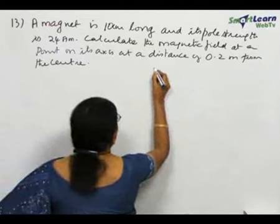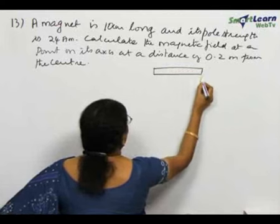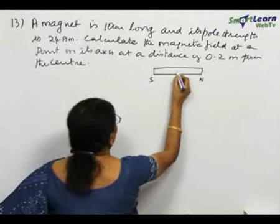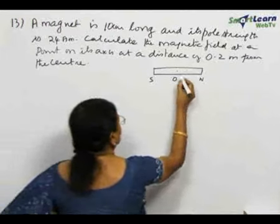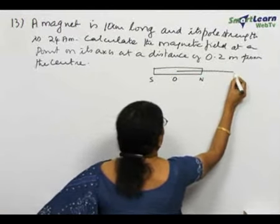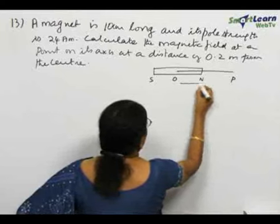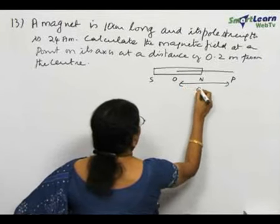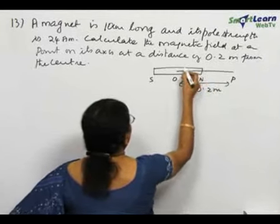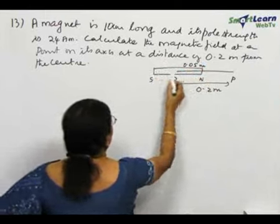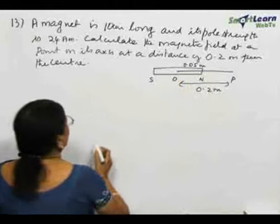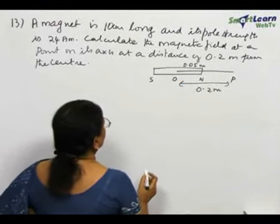First of all, let us draw the diagram. This is the north pole, south pole, midpoint of the magnet is O. All distances are measured from the midpoint. This is P. This distance is 0.2 meter. The semi-length of the magnet is 0.05 meter. This total length is 0.1, 10 centimeter, 0.1 meter.